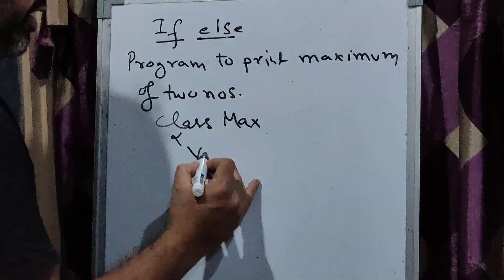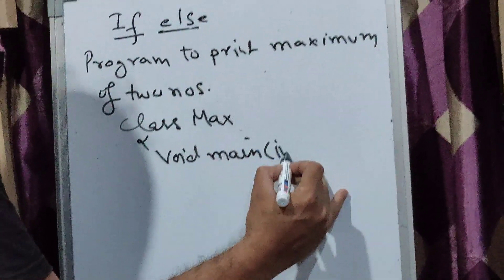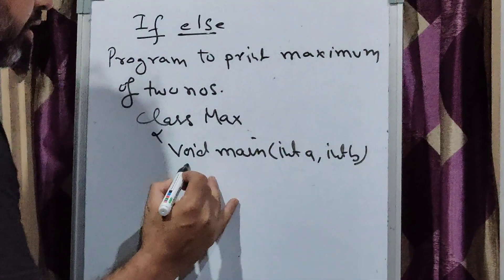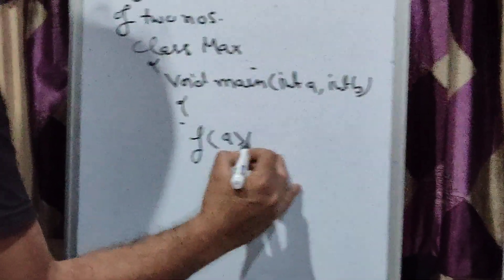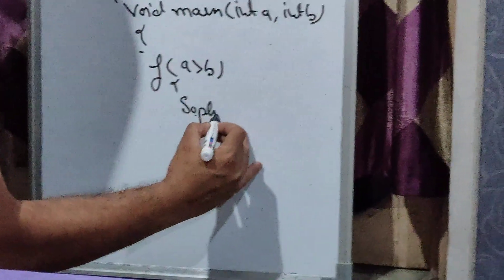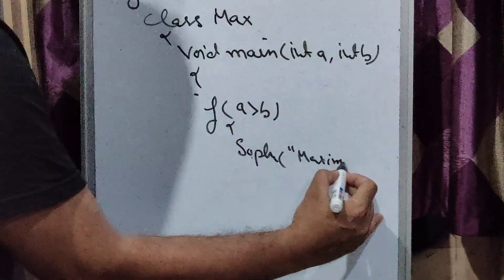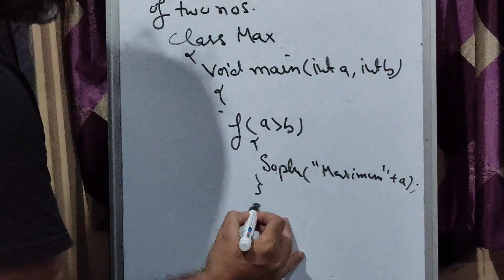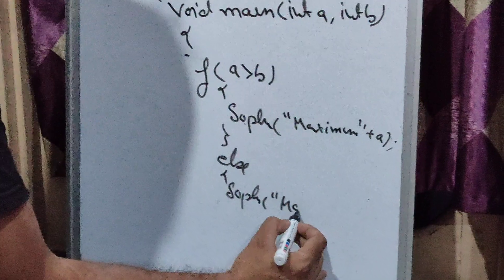You can write a class — name it anything, like Max. Use void main or public static void main, depending on your setup. Declare int a and int b — this gives you two variables. Now you can write an if condition: if a is greater than b, then system.out.println maximum plus a.